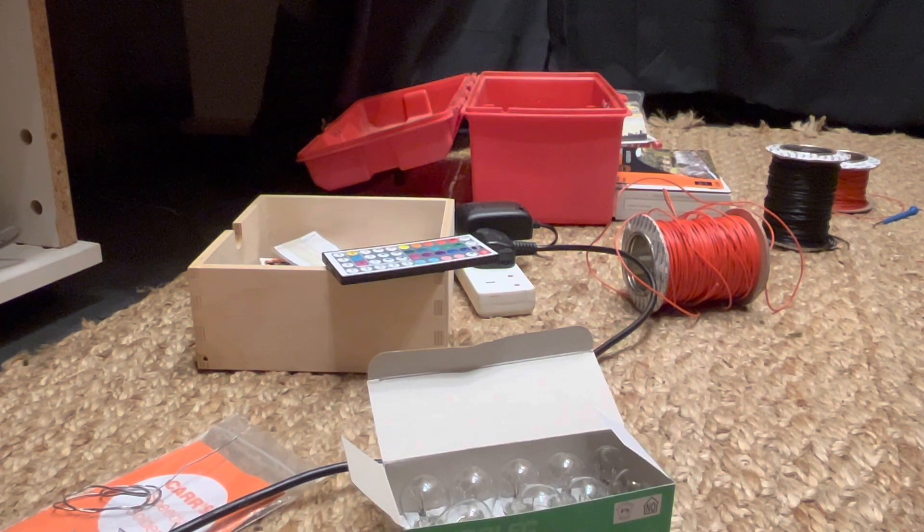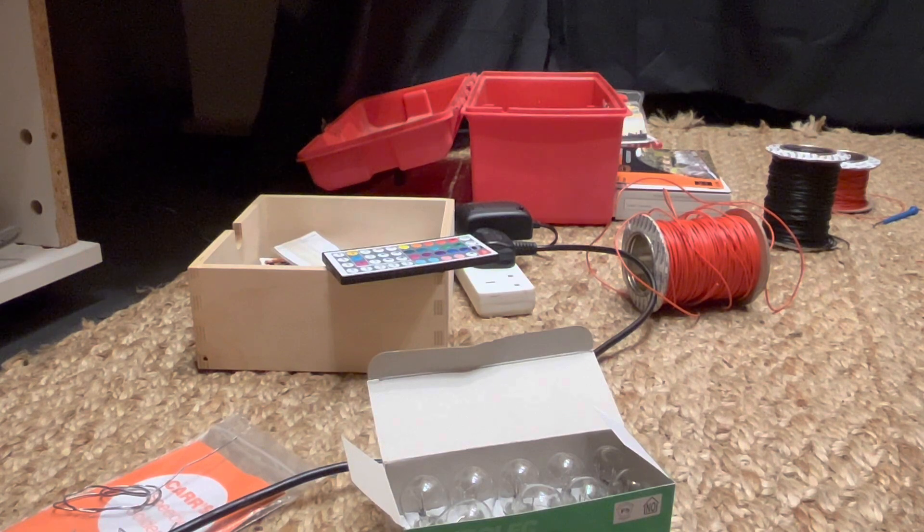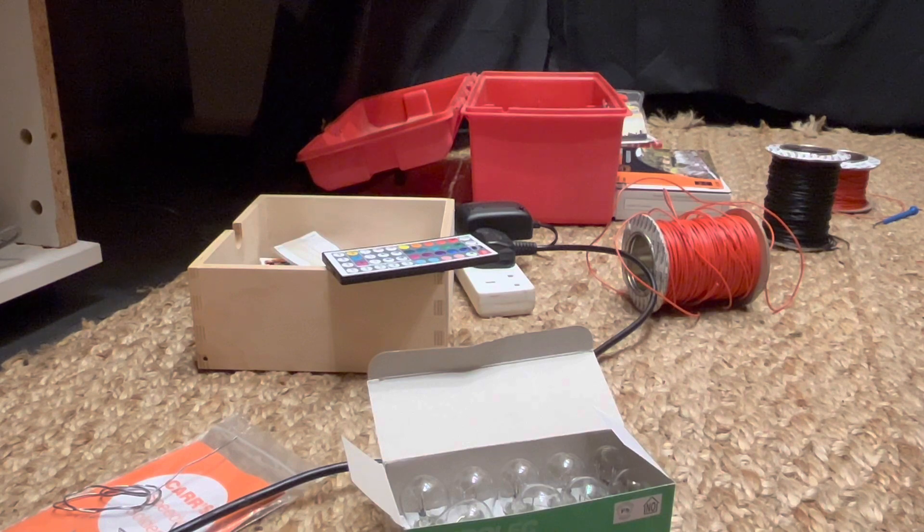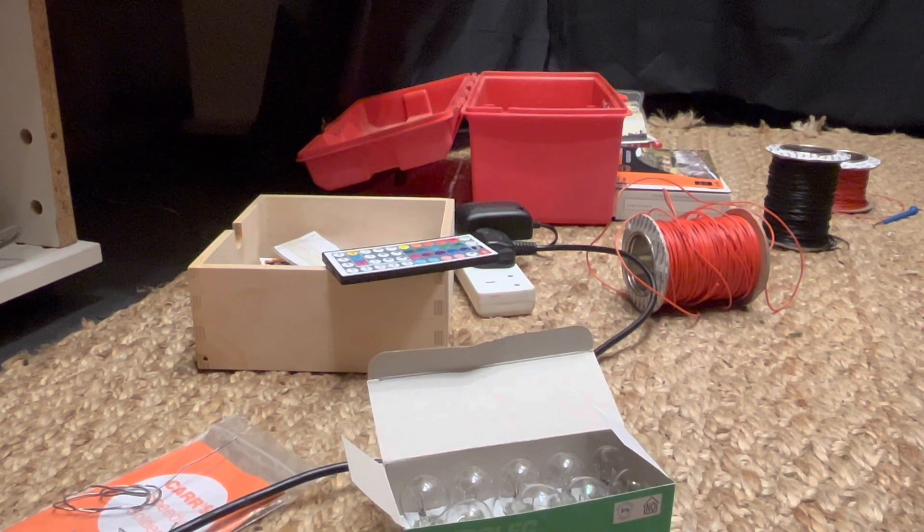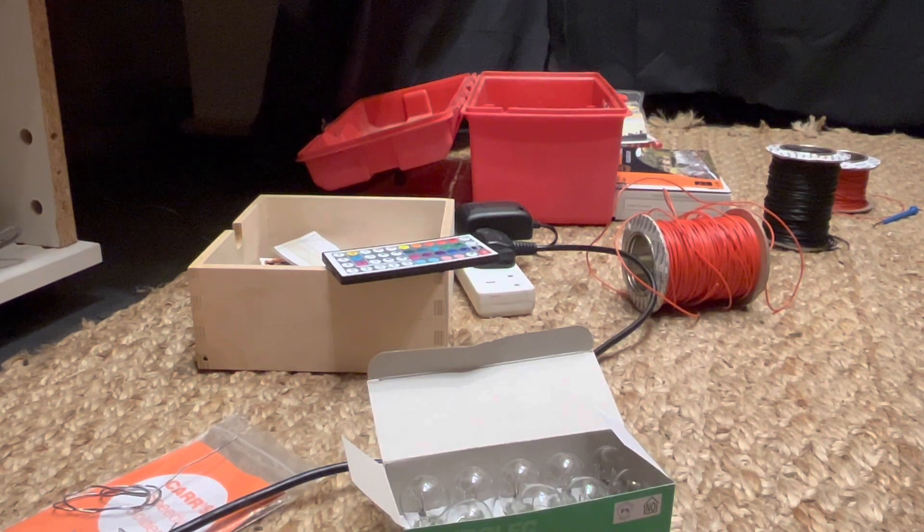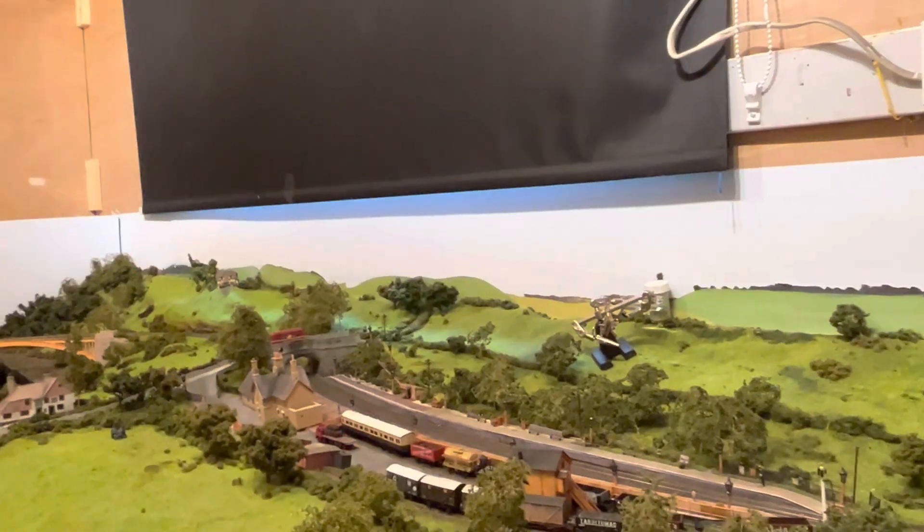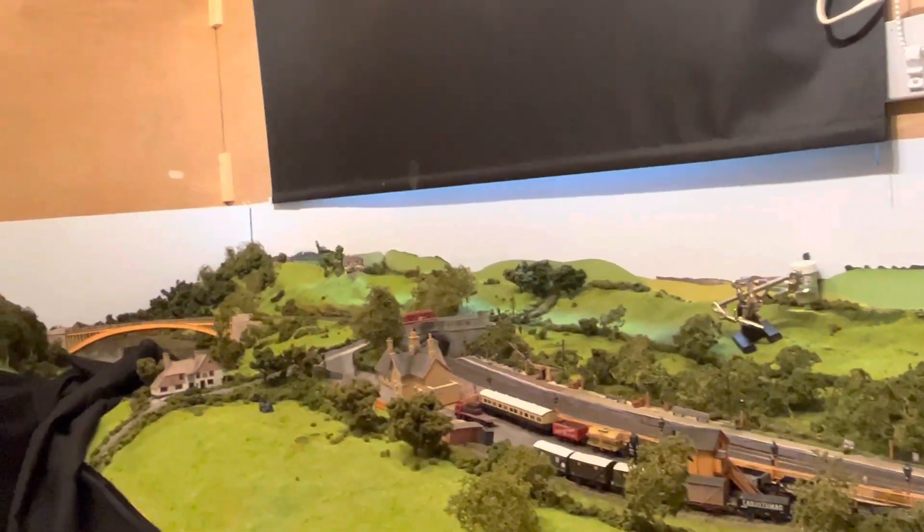The other solutions are to run a completely new DCC bus loop, a completely separate DCC bus loop just for the point motors so that it doesn't really matter if there's a short on track they're not actually connected to the same loop. That's obviously at this point in the journey you can probably see that starting to rewire everything would be a bit of a pain.